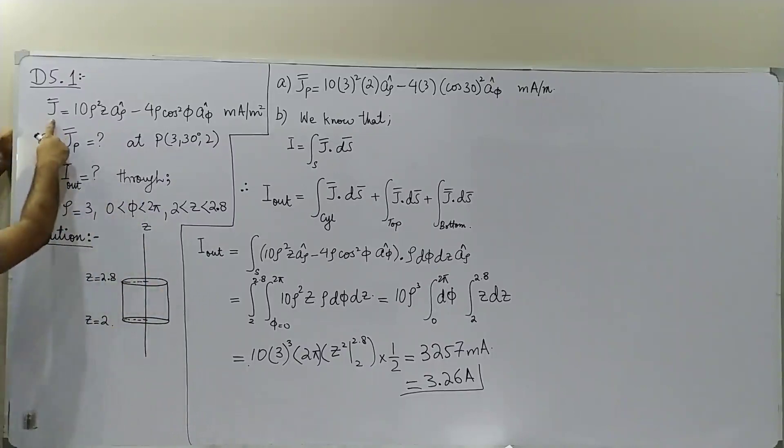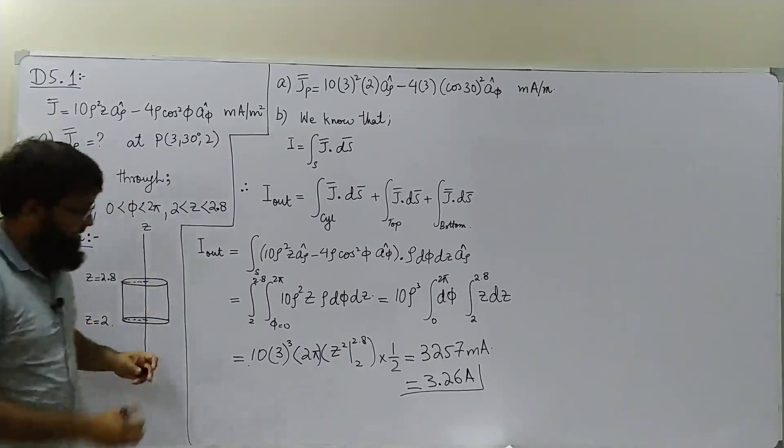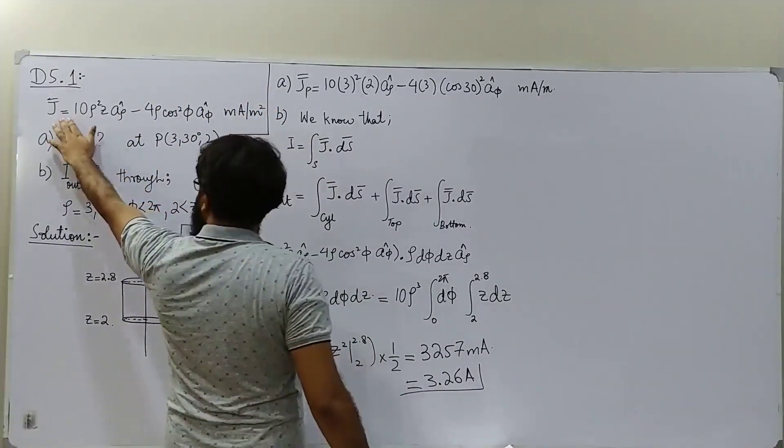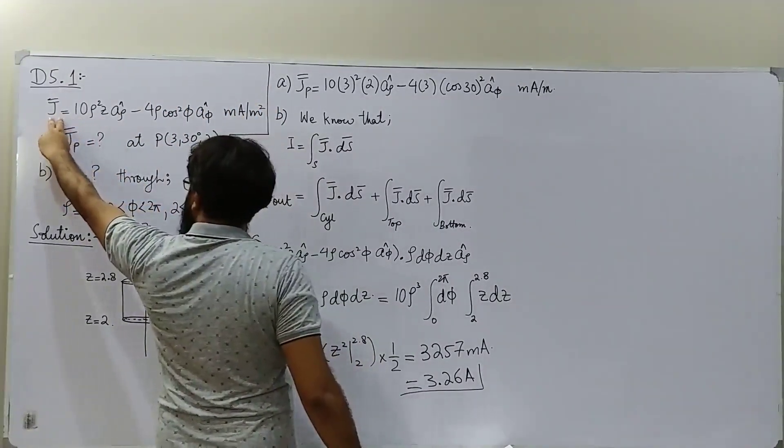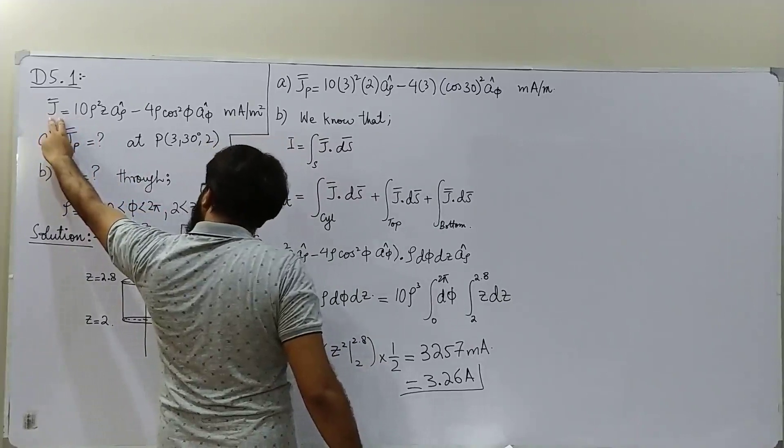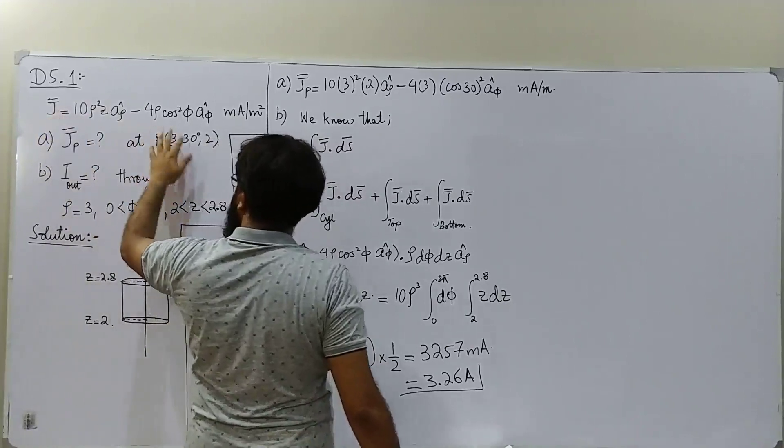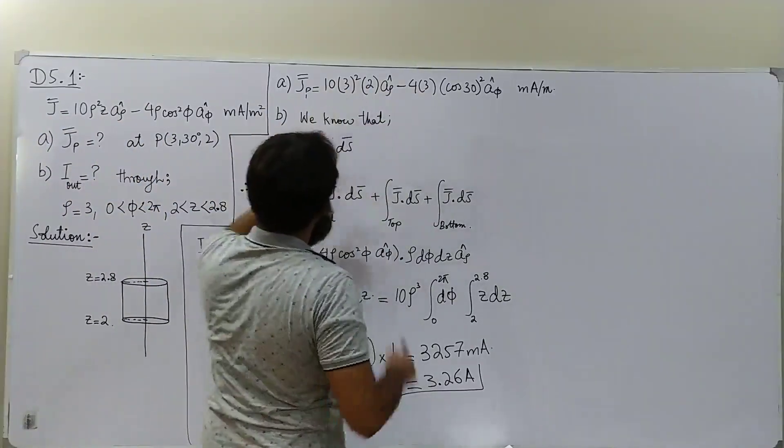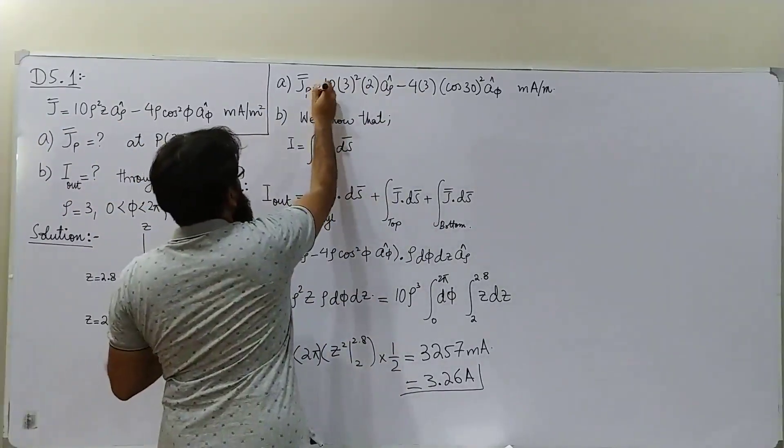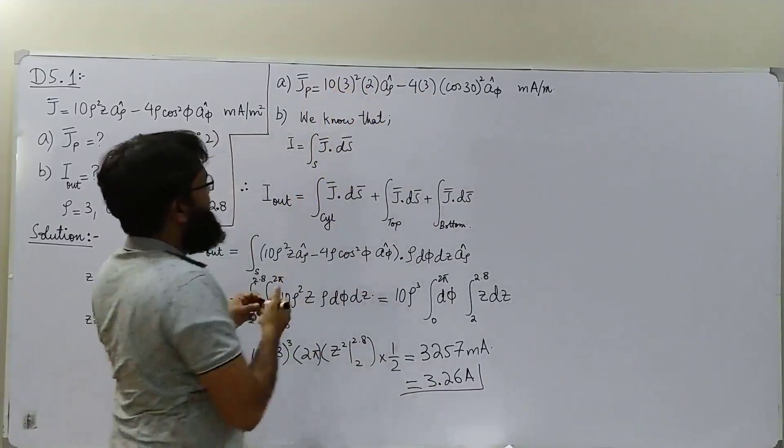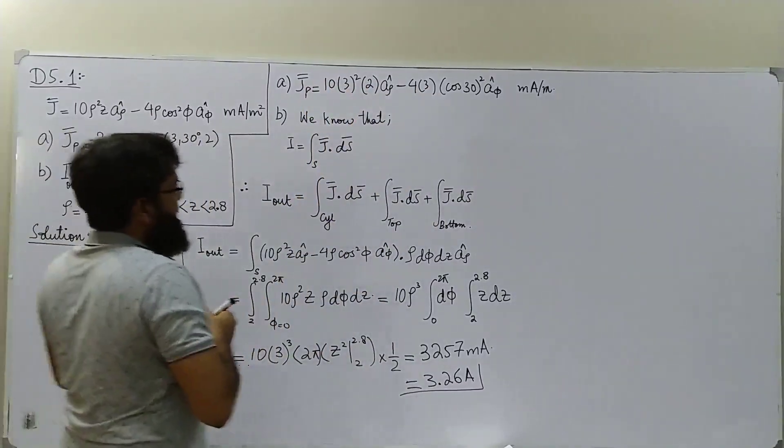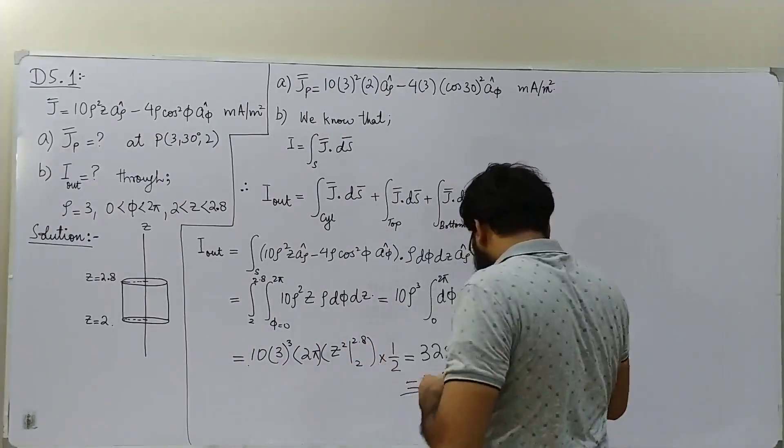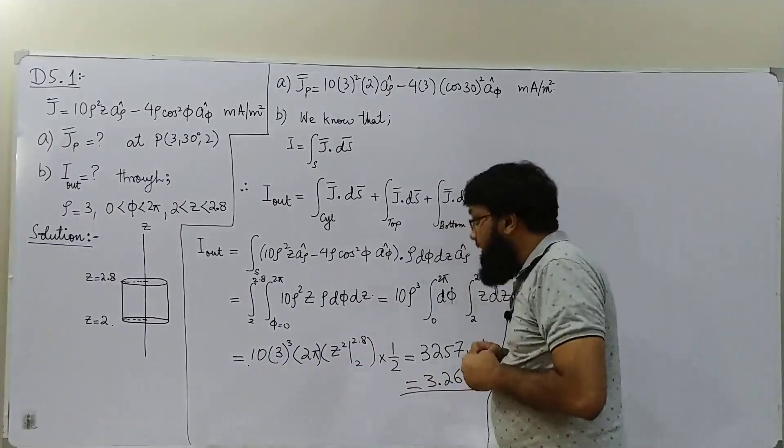Part (a) is very simple—given the vector field expression for J, just replace the value of ρ and φ and you will get the answer. So I did not even bother to solve it; just put the values and get the answer. But remember that the answer will be in milliamperes per meter square.